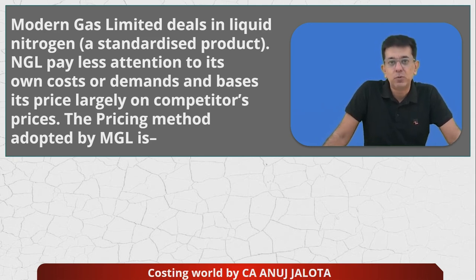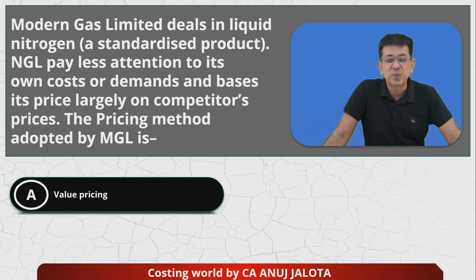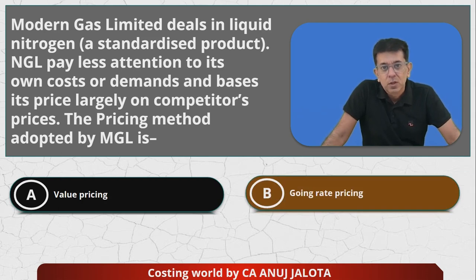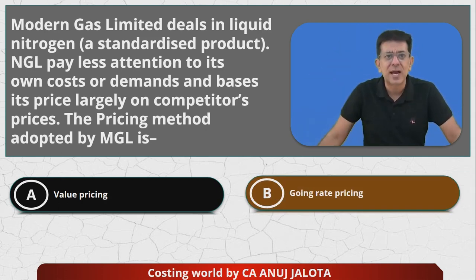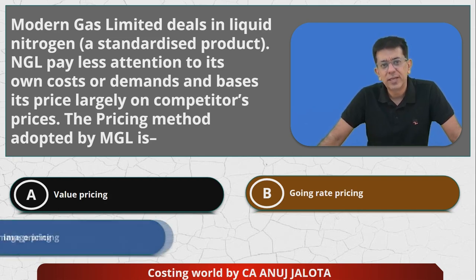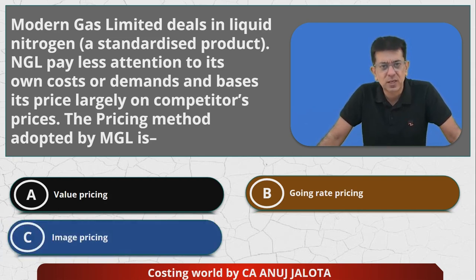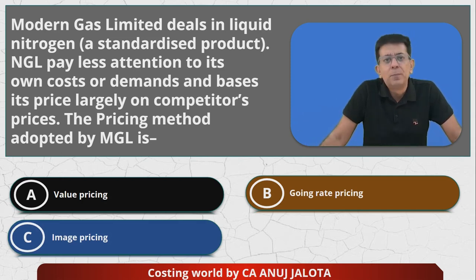Let's look at the four options. Option A is value pricing, also called value-based pricing, perceived value pricing, or customary pricing. Option B is going rate pricing, which means whatever price the competitors are offering the product at, we will also offer the product at the same price.